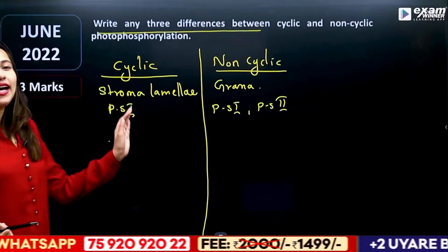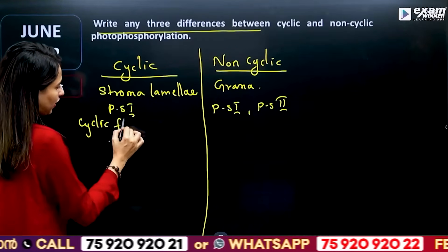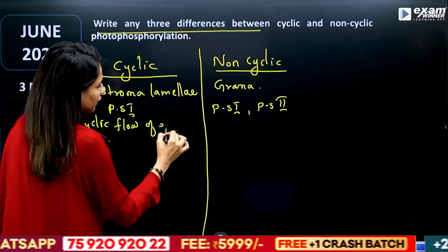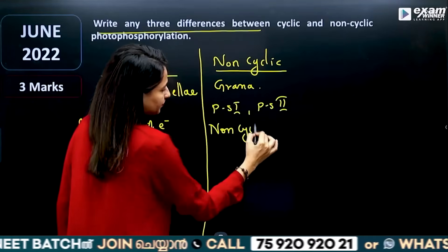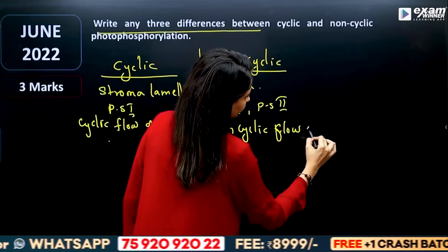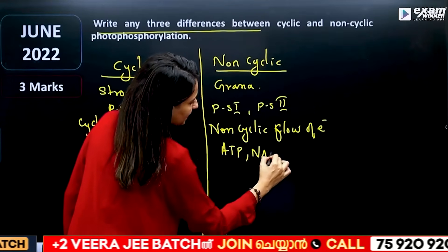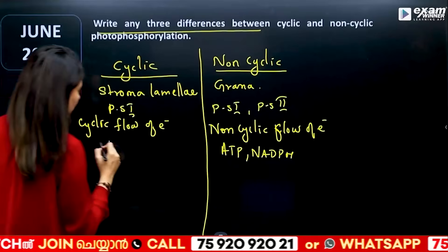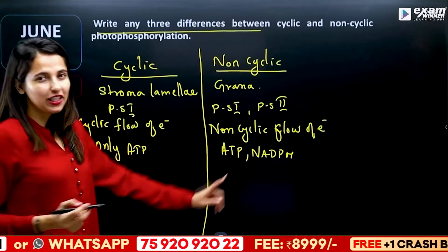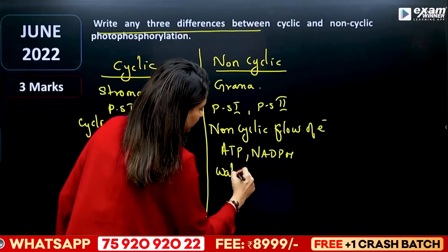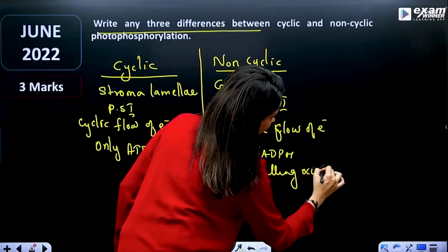In cyclic photophosphorylation, there is a cyclic flow of electrons. In non-cyclic photophosphorylation, there is a non-cyclic flow of electrons, and both ATP and NADPH are synthesized. In cyclic, only ATP is produced. In non-cyclic photophosphorylation, water splitting occurs and oxygen is released.